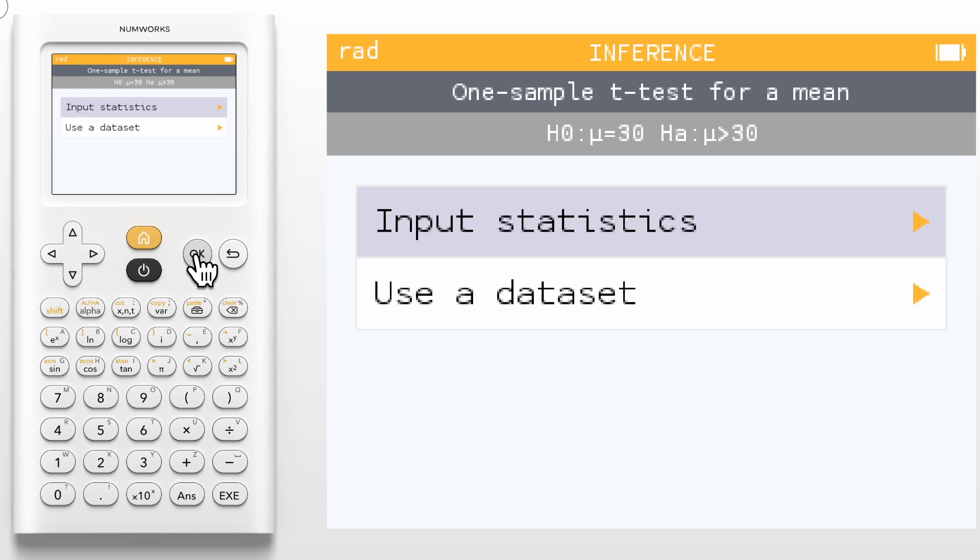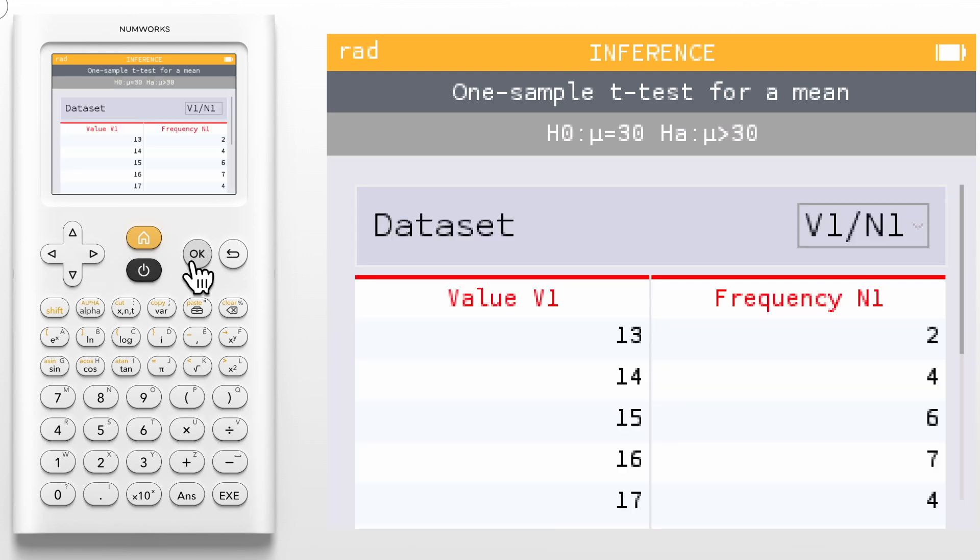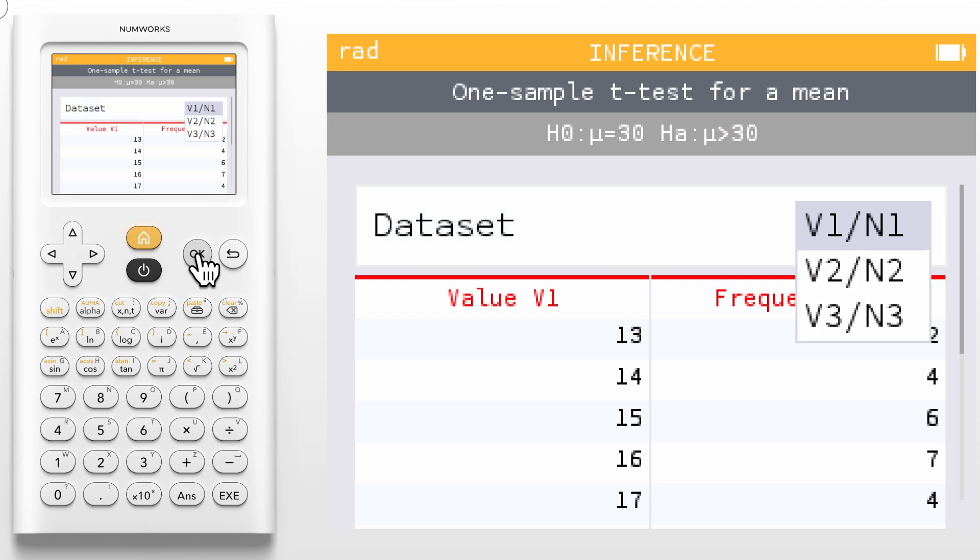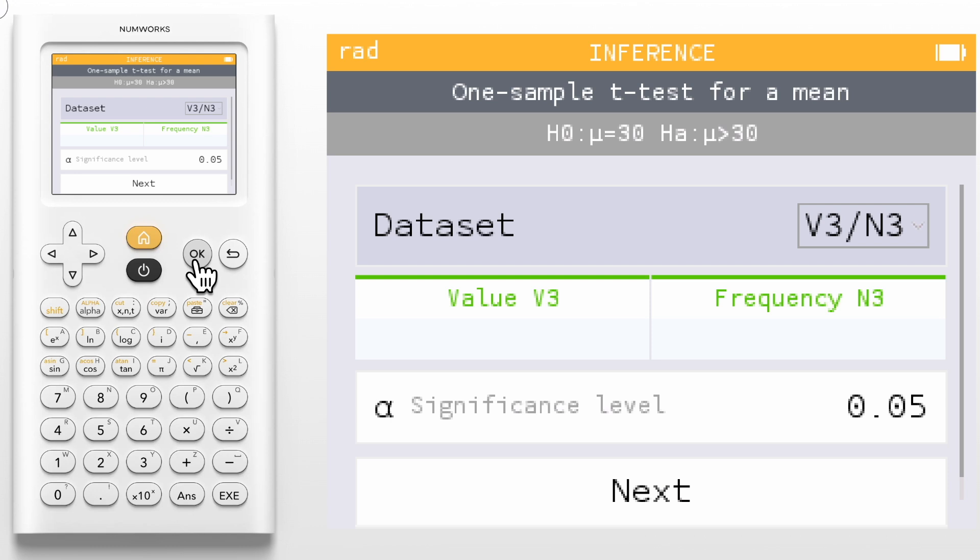Here you will need to make a decision of inputting summary statistics or using a data set. Let's first investigate using a data set. Press OK to use a data set. Here you will be asked which data set you'd like to use. Pressing OK will allow you to use the data set stored in the statistics app, V1N1, V2N2, or V3N3. It is also worth mentioning that you can edit these values directly in the table or press OK on the top banner to clear the list. For this example, we will use V3N3 as it is already empty.